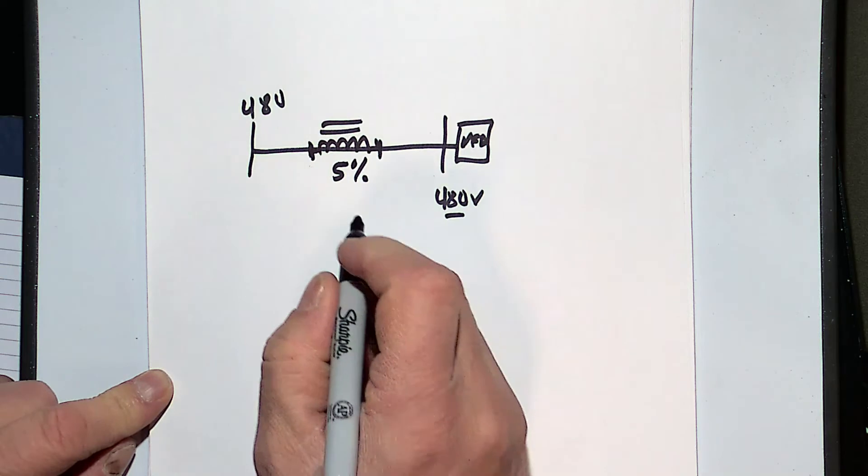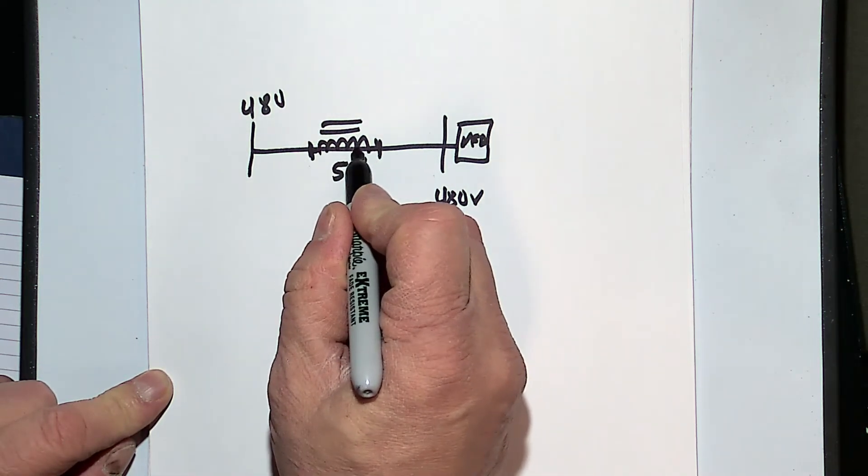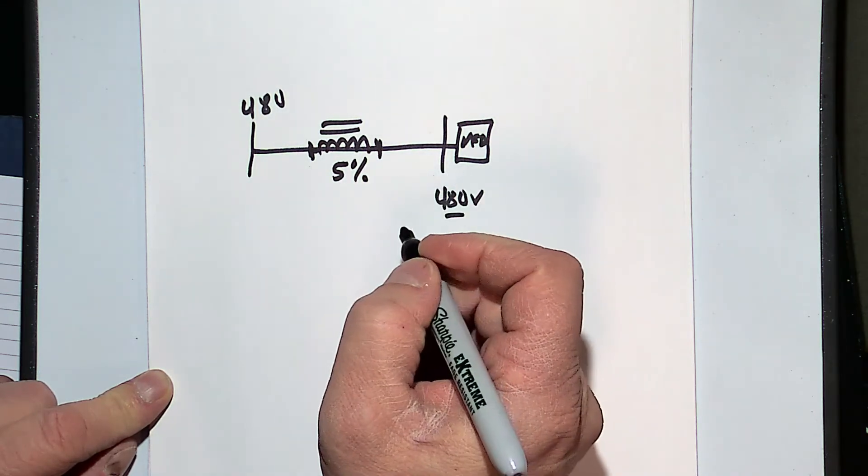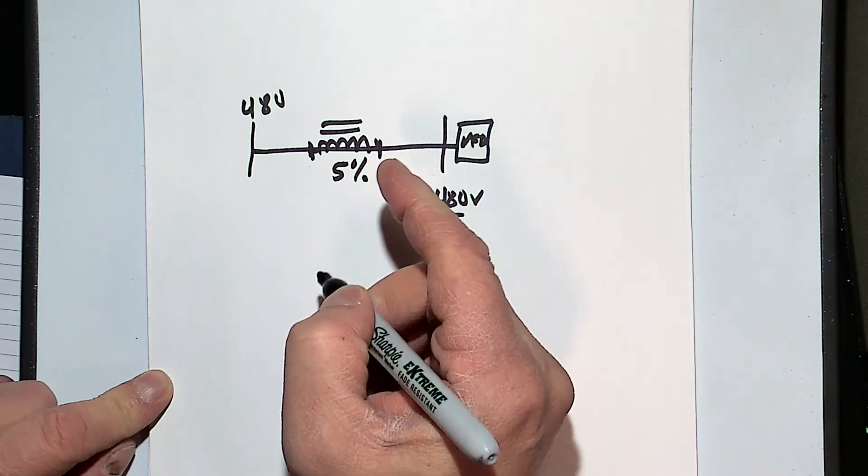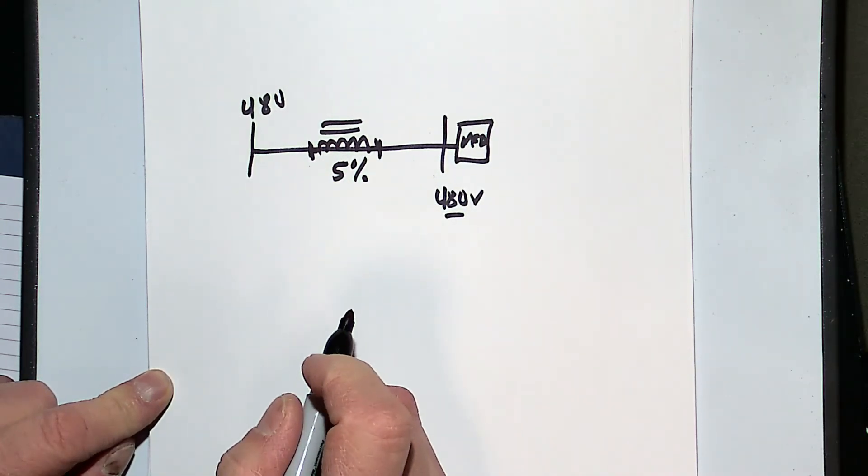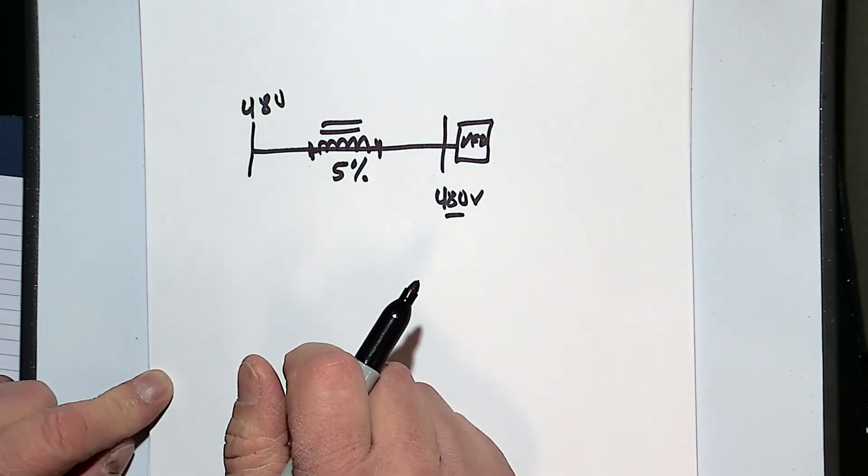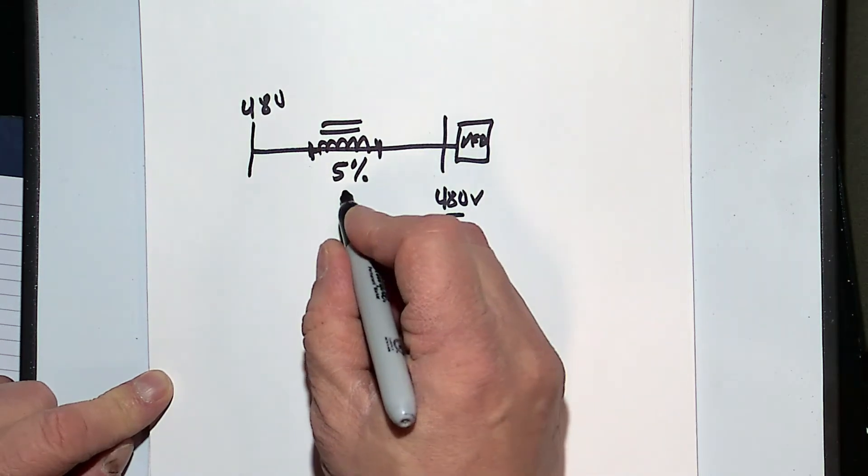What our experience has shown us is that because this is an inductive reactance, and because the load has a high power factor, meaning the voltage and current are in phase, the drop across this reactor is tangential to the line current that's flowing. So when we multiply those two together, we might get about maybe half of that percent drop, so maybe 2% drop.